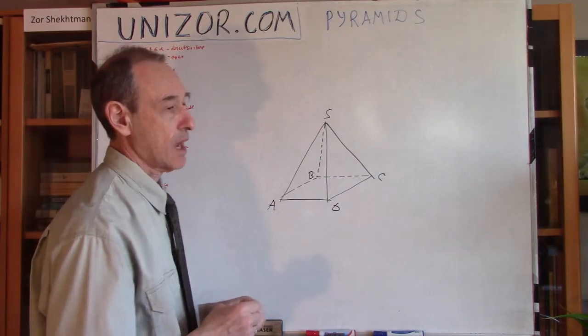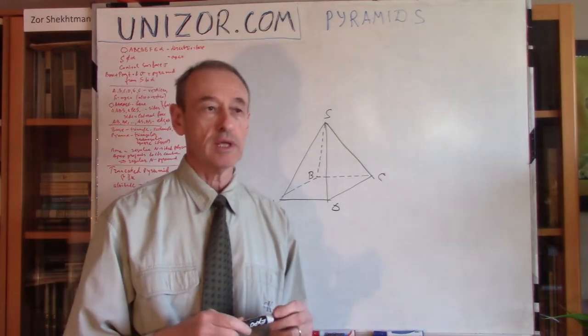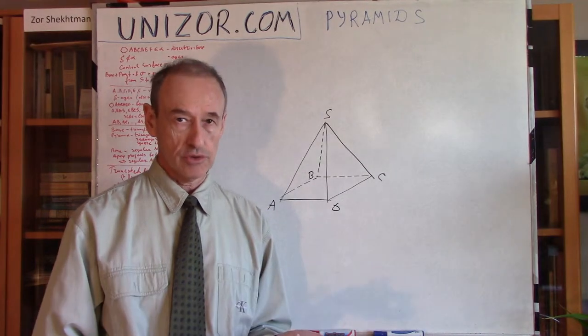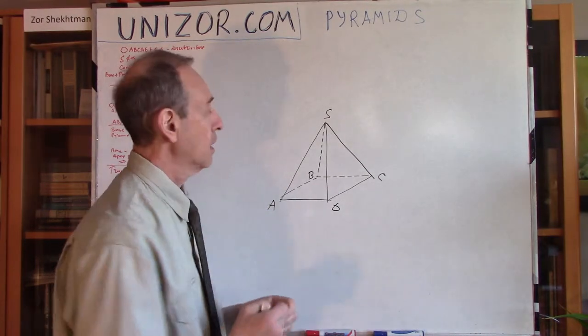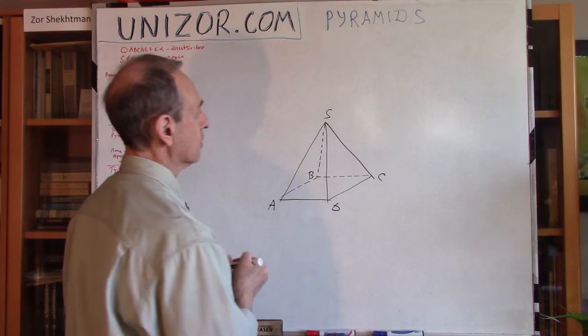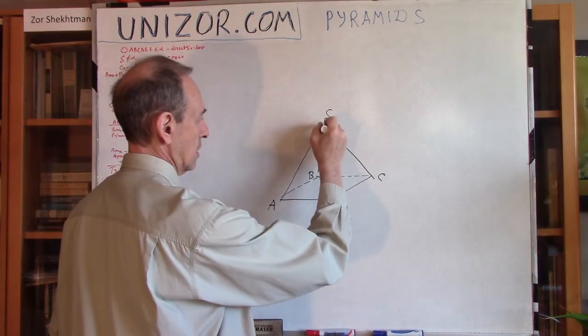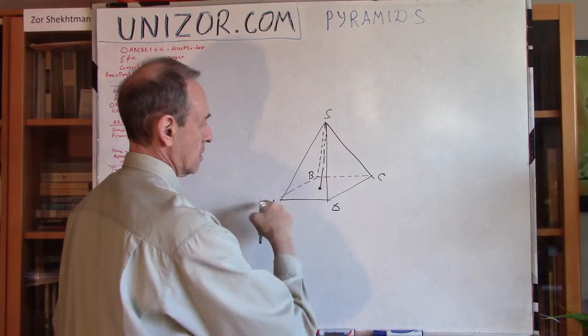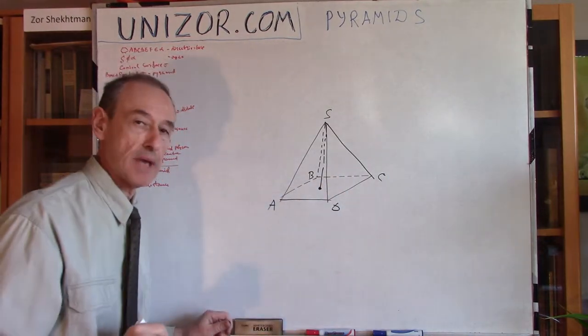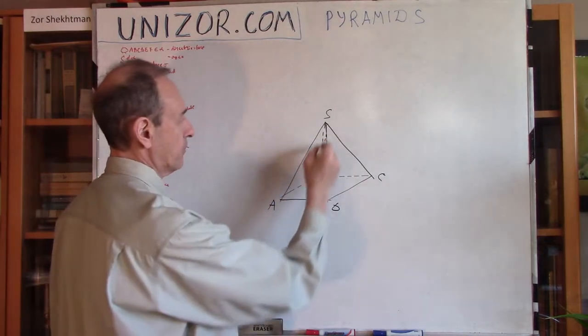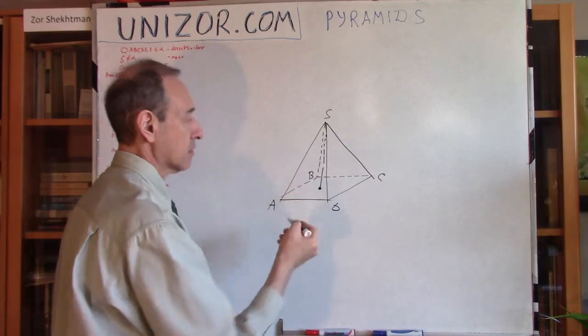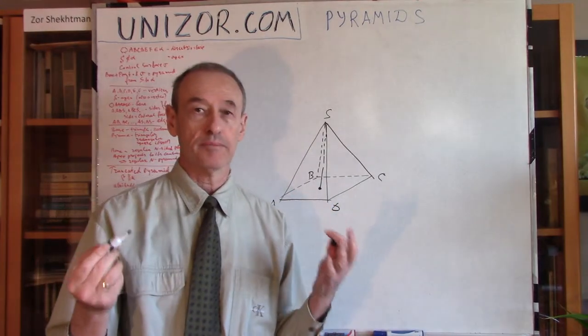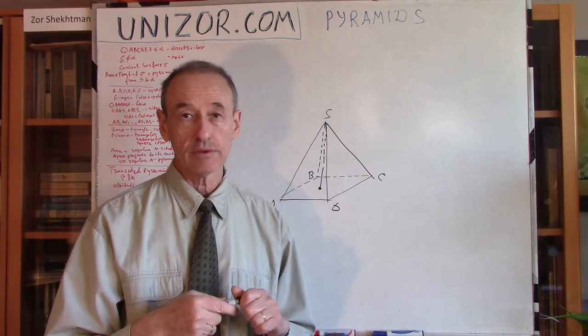Another important characteristic of the pyramid is its altitude or height. Well, if you draw a perpendicular from the apex to the plane which contains the bases, this perpendicular is called, basically, an altitude or height of the pyramid.